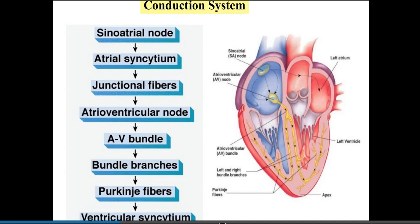The conduction system pathway proceeds from the sino-atrial node to the atrial syncytium, then to junctional fibers, the atrioventricular node, the AV bundle, bundle branches, Purkinje fibers, and finally triggers the ventricular syncytium — completing normal cardiac conduction.